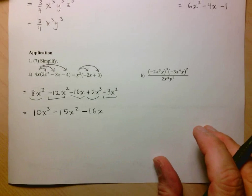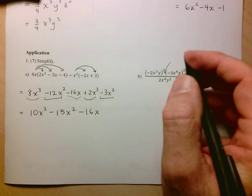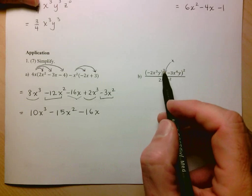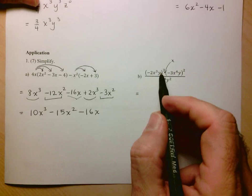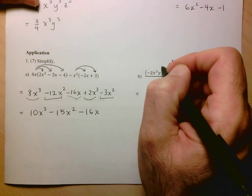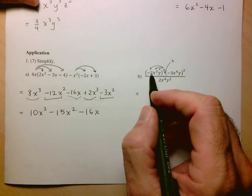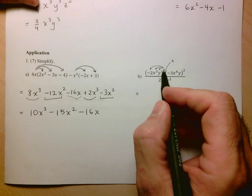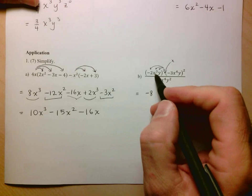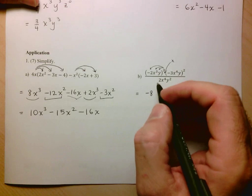Let's move on to 1b. This one gave a lot of people problems. The main difficulty was remembering that the operation between these two expressions is a multiplication. But the first thing you have to do is take care of these exponents. Let's start with the exponent 3 on the left monomial.